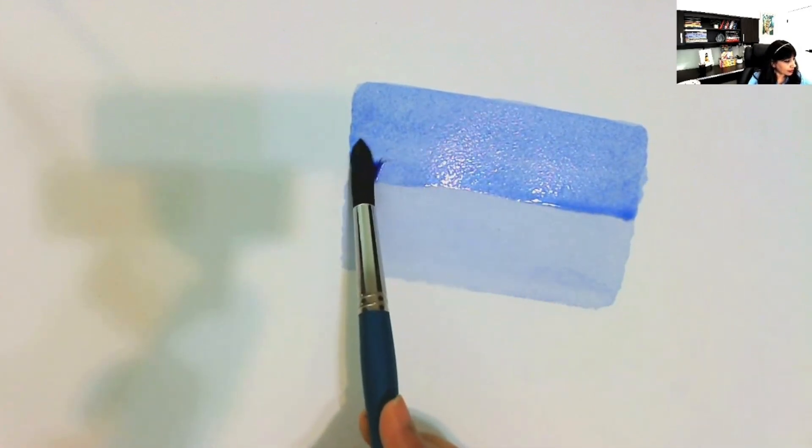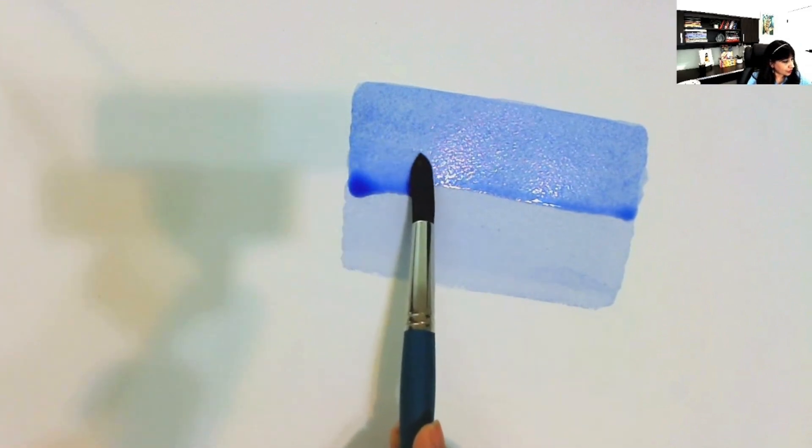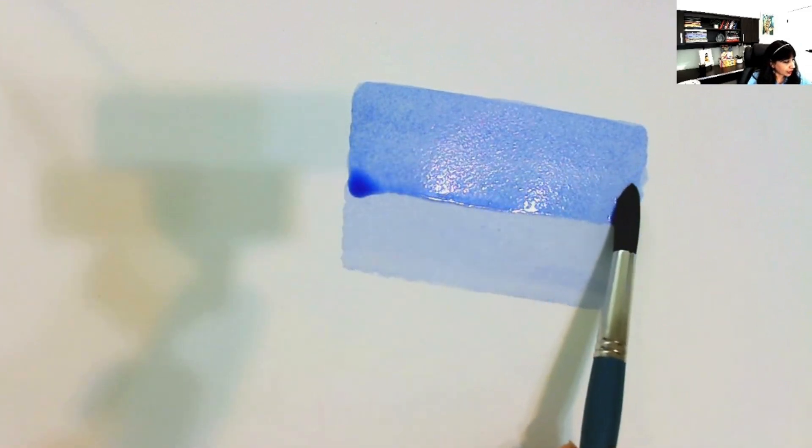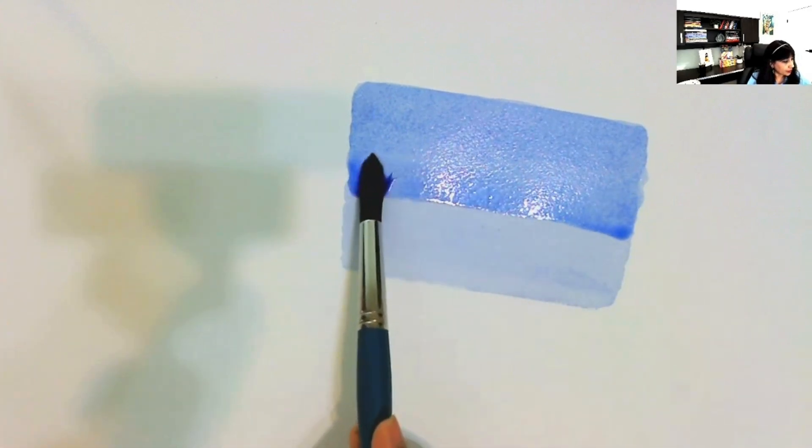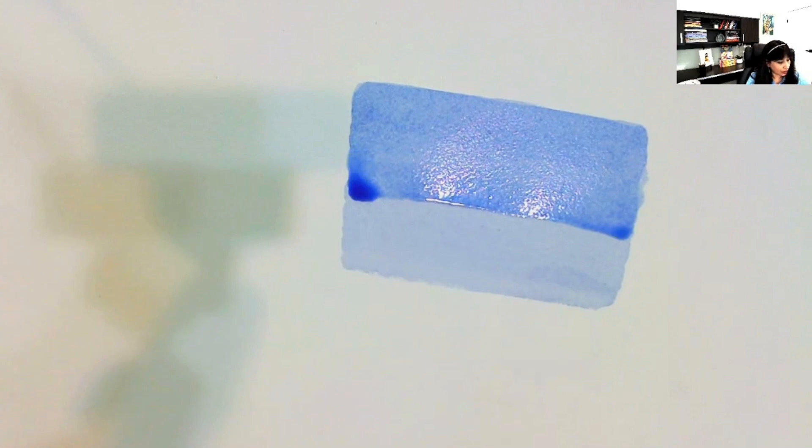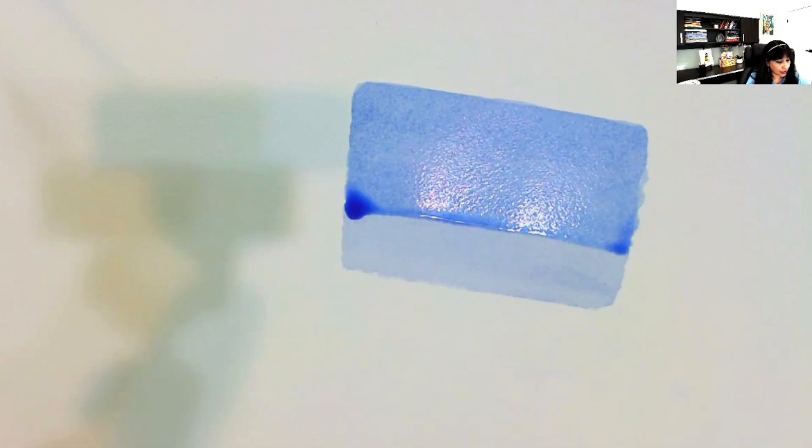And since we have kept the paper at an angle, the gravitational force is working on the bead and the paint is not running upside. If you keep the paper flat and not tilted, then there is a chance that the watercolor paint may travel upside and you get a back run causing watercolor bloom.